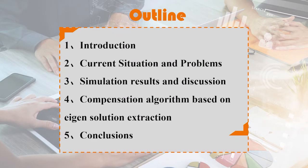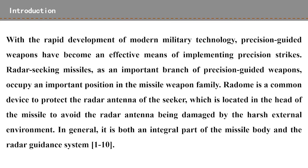And that's my outline. With the rapid development of modern military technology, precision-guided weapons have become an effective means of implementing precision strikes. Radar-seeking missiles, as an important branch of precision-guided weapons, occupy an important position in the missile weapon family. Radome is a common device to protect the radar antenna of the seeker, which is located in the head of the missile to avoid the radar antenna being damaged by the harsh external environment. In general, it is both an integral part of the missile body and the radar guidance system.